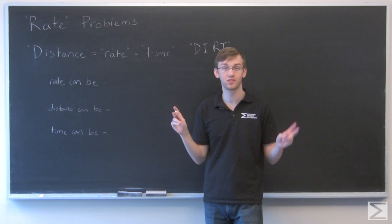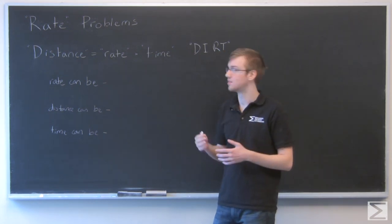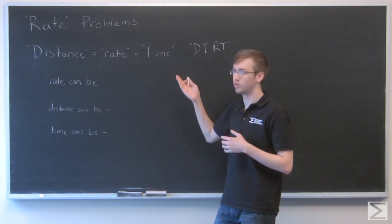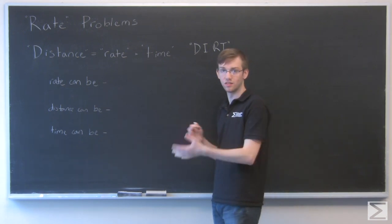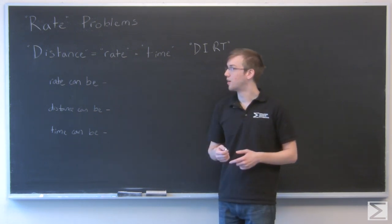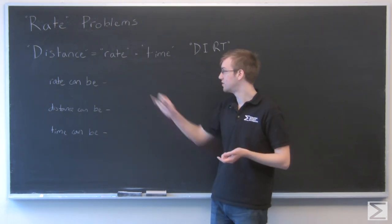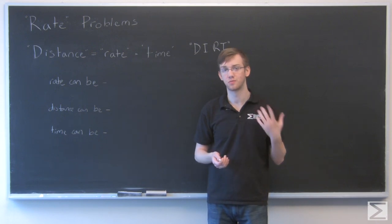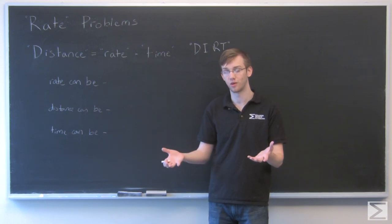Now, why are these words in quotes? The answer is because distance isn't always distance and time isn't always time. We can use this formula to solve a number of different types of problems if we think of distance and time in a number of different ways. So the best way to figure out how to solve a rate problem is to begin with rate. Rate will pretty much always be something per something else, a quantity per another type of quantity.